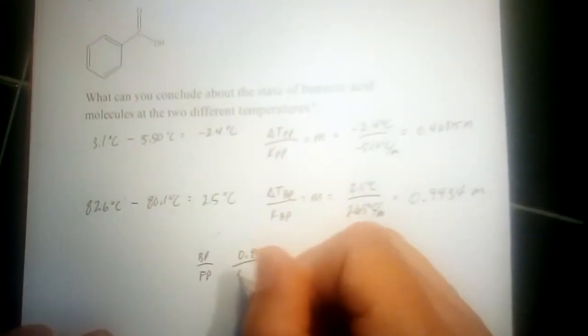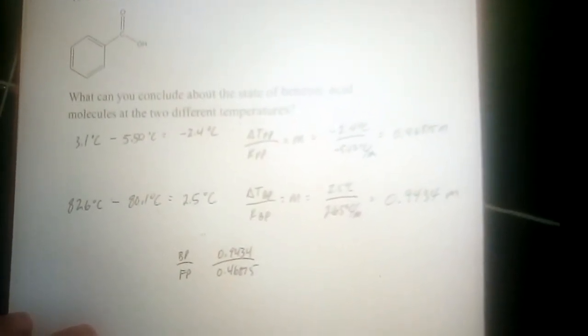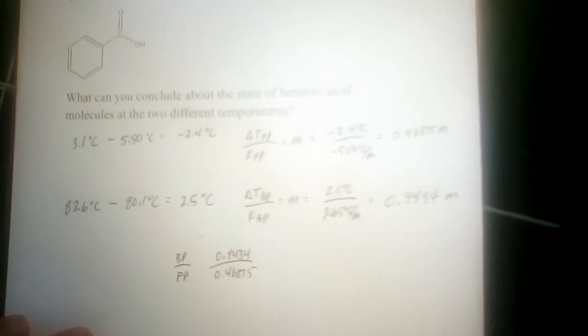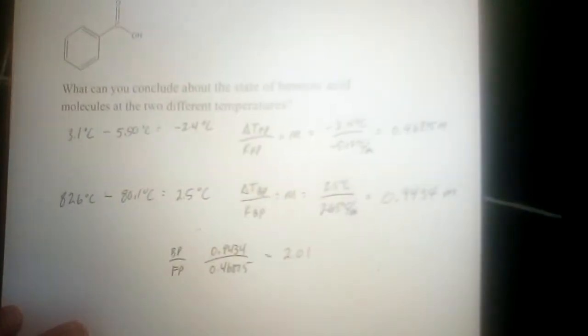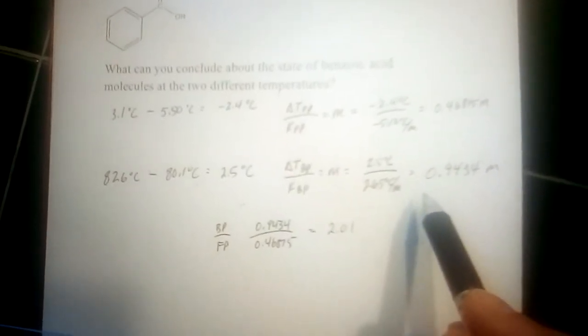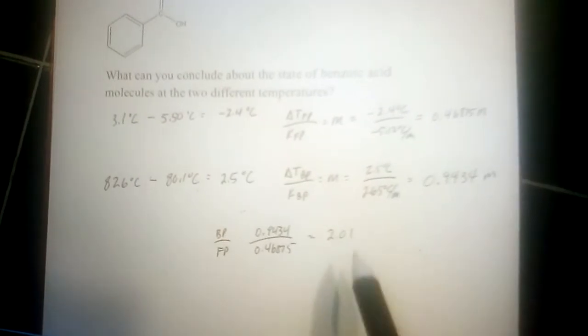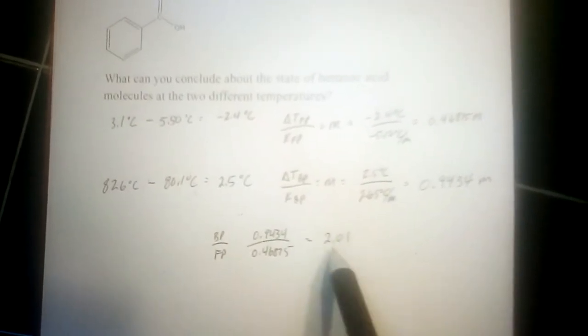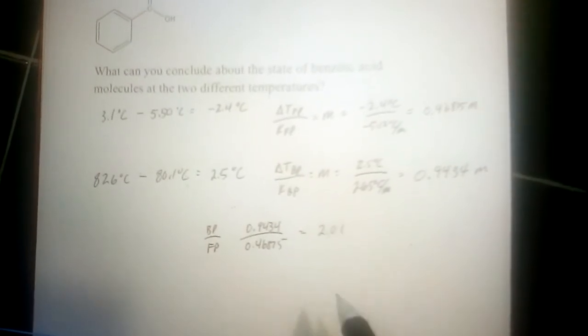If we compare boiling point to freezing point molalities, 0.9434 divided by 0.46875 is a little more than 2, it's 2.01. So there are about two times as many particles in solution at the boiling point as at the freezing point. But we can't explain this by the molecule breaking into two pieces because that shouldn't get us above two.